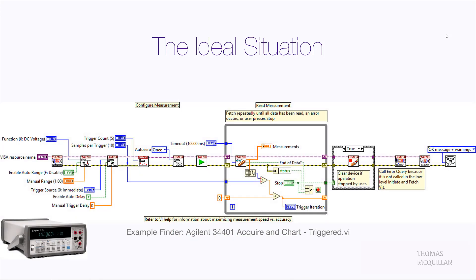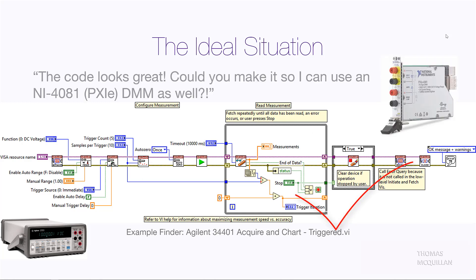Let's say we had a situation where we wrote some code for an Agilent 3401 DMM, or digital multimeter. You can see the code looks very nice and neat — there's good VI icons, good documentation, it's very well structured. However, your customer comes back and says the code looks great, but could you make it so I could use an NI 4081 DMM as well, which is a PXIe card. And because we want to please the customer, we say absolutely.